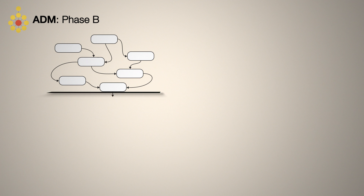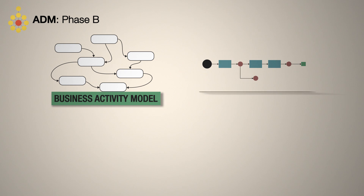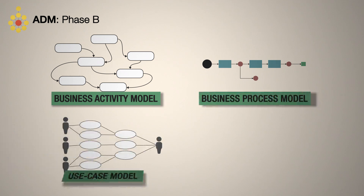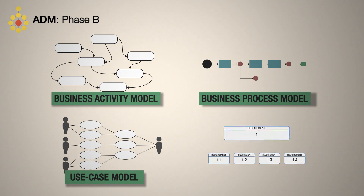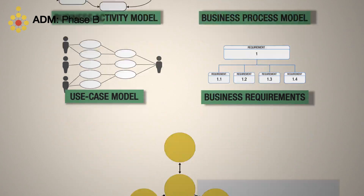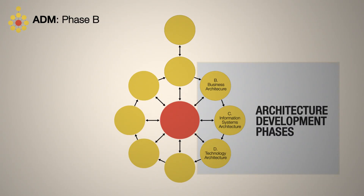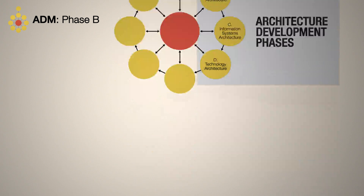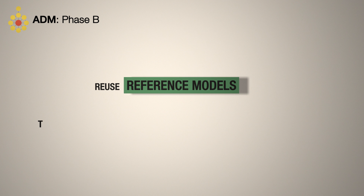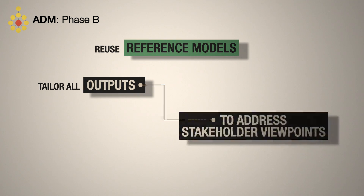Business models such as activity or process models, use case and class models, or node connectivity diagrams extend business scenarios to map architecture from high level to more detailed business requirements. All three architecture development phases — B, C, and D — follow similar steps. It's important to reuse any available reference models and tailor all outputs to address stakeholder viewpoints.